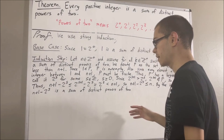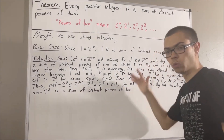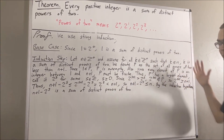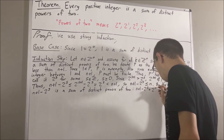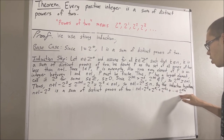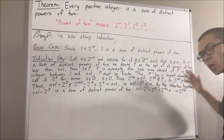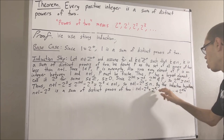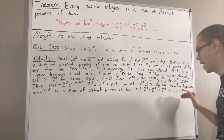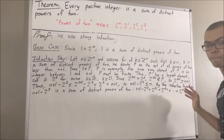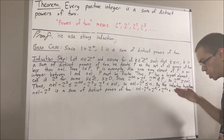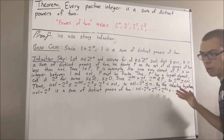So if we take k to be n plus one minus two to the s, we have that n plus one minus two to the s is a sum of distinct powers of two. We're going to say that the sum goes two to the e1 plus two to the e2 plus dot dot dot plus two to the en. Since this is a sum of distinct powers of two, for all integers i and j between one and n where i is not equal to j, we have that ei is not equal to ej — each ei and ej are distinct.